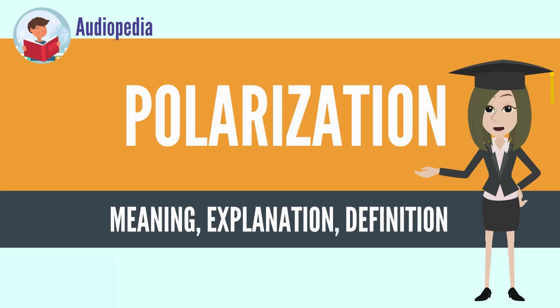Light or other electromagnetic radiation from many sources, such as the sun, flames, and incandescent lamps, consists of short wave trains with an equal mixture of polarizations. This is called unpolarized light.